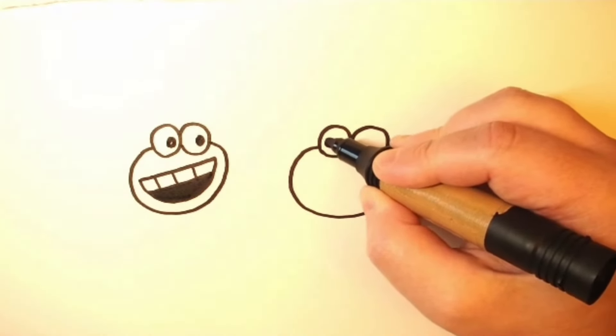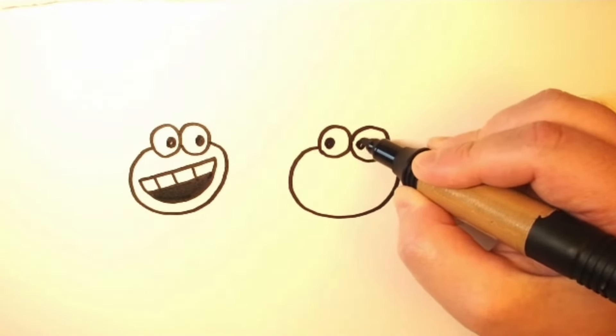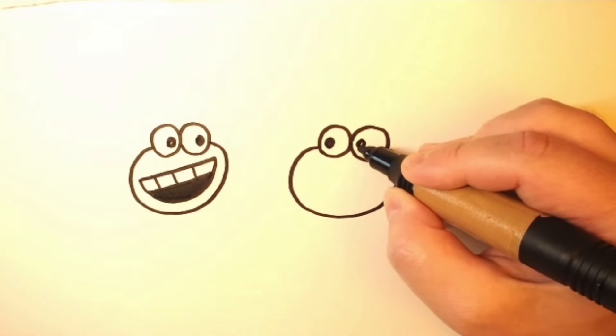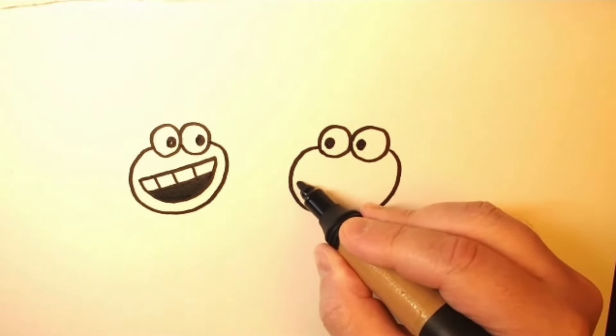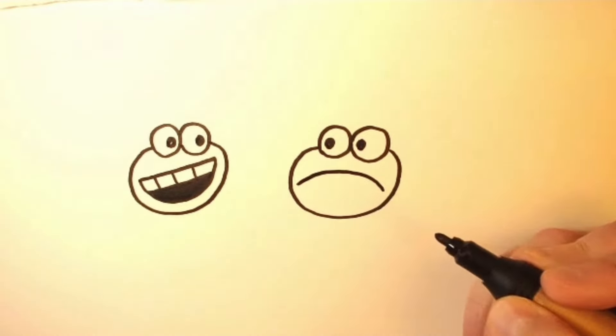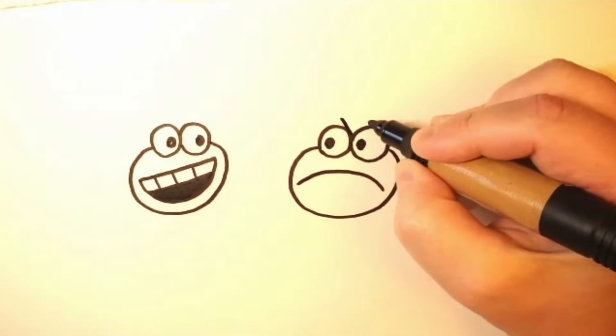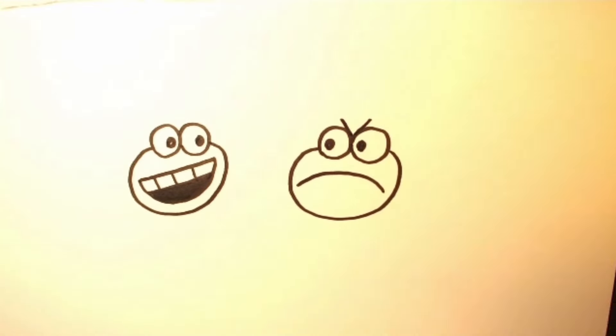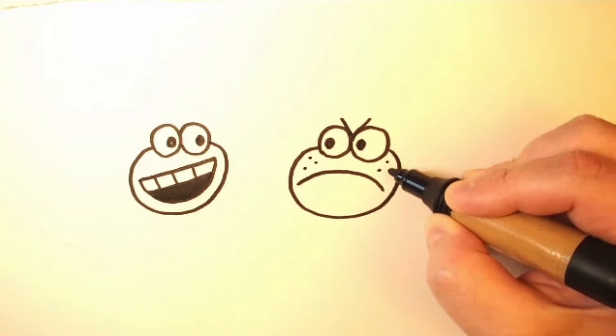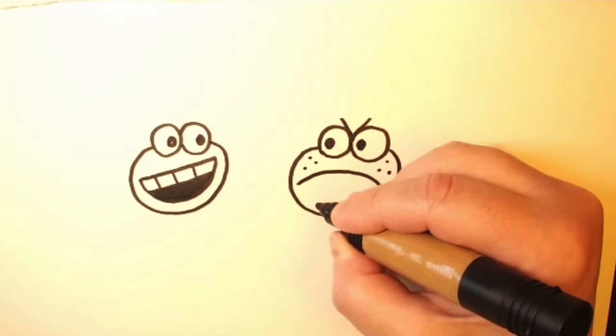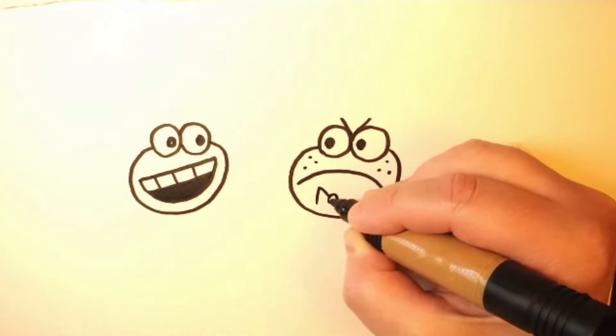And then over here we'll make this one. Actually this frog is based on Melvin Sneadley if you've read the Captain Underpants books or you've seen that movie or the TV show. Melvin is one of George and Harold's frenemies and they decided to base one of the baby frogs on Melvin.